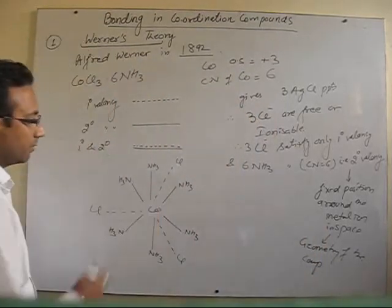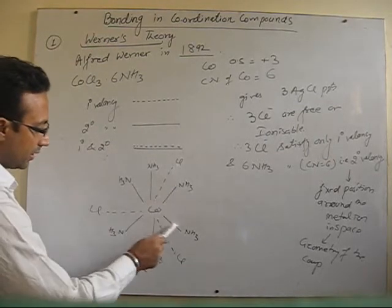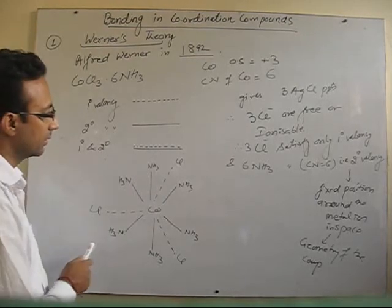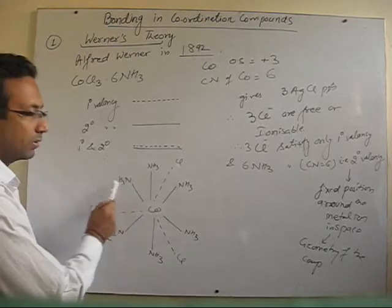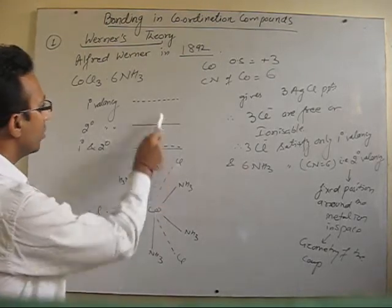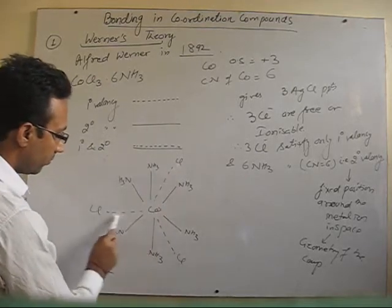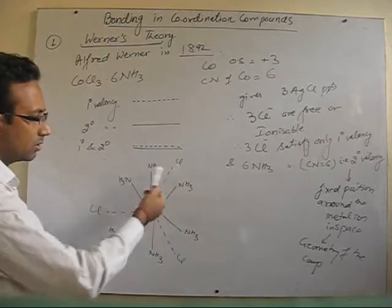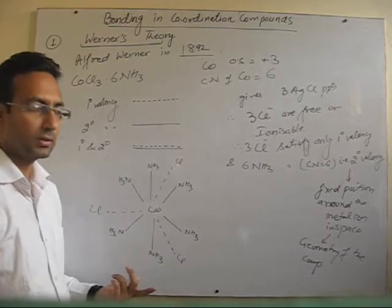The structure given for this compound shows that all 6 bold lines pointing towards the 6 corners of the octahedron are satisfied by ammonia only, because we have 6 ammonia available. The 3 Cl are shown by dotted lines attached to cobalt. These dotted lines can be placed anywhere, because they are simply ionic bonds.